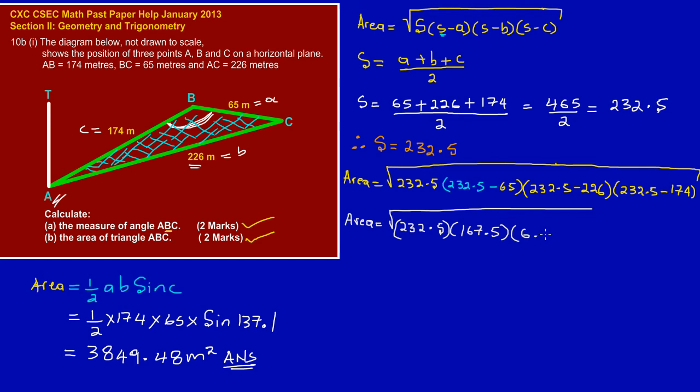Close bracket, open bracket. Here we have 232.5 minus 174, and that should leave us with 58.5. So when we multiply out all of this now, my friends, when we multiply out all of that, we should have area is equal to the square root.